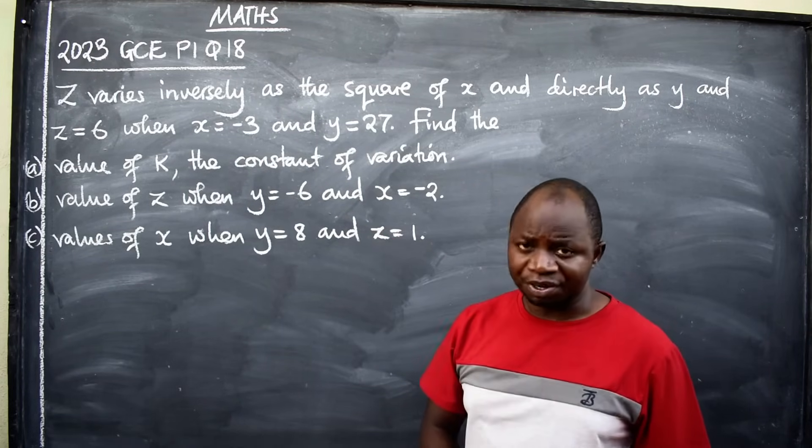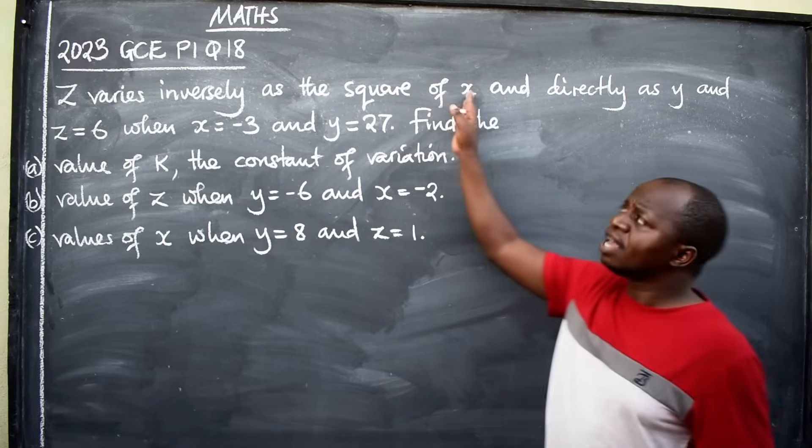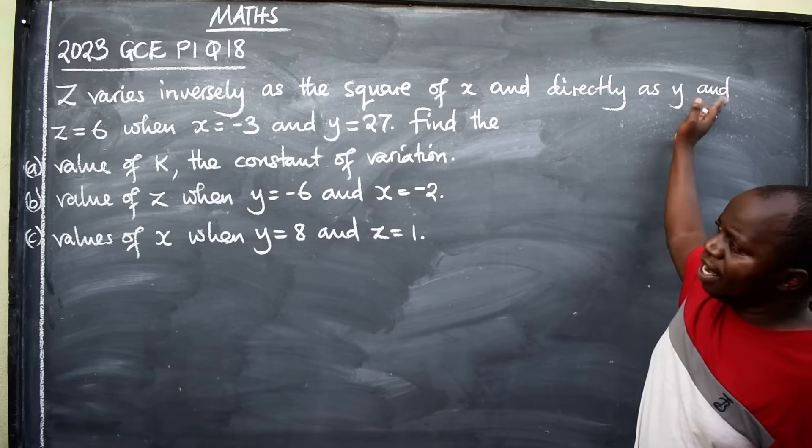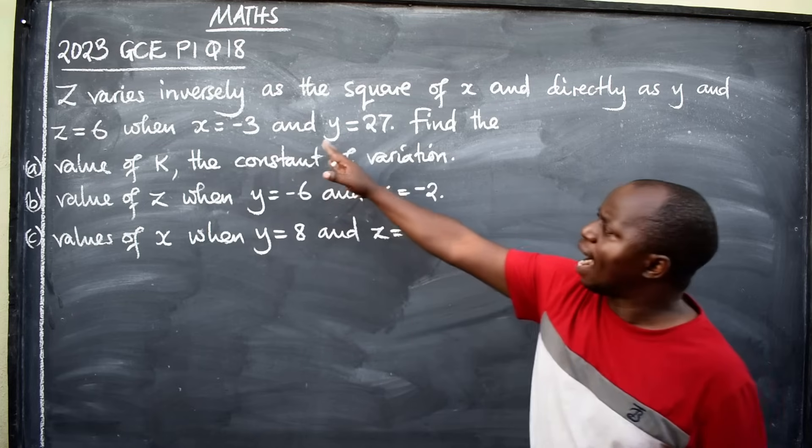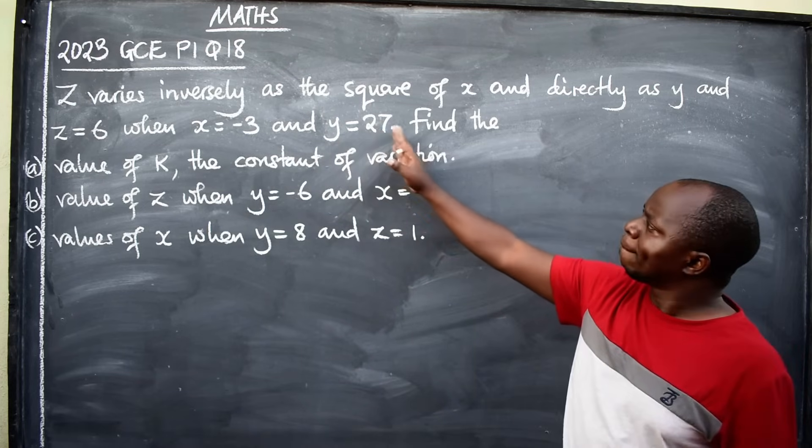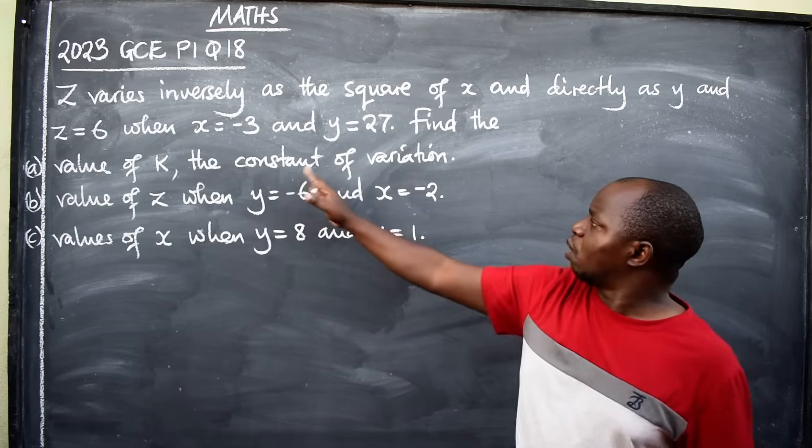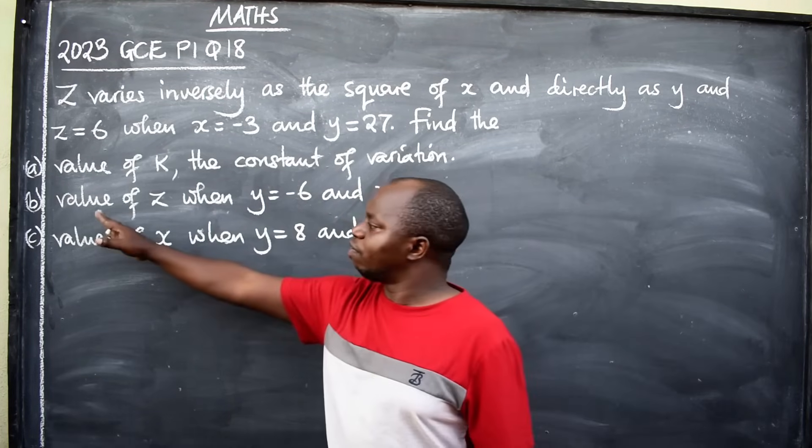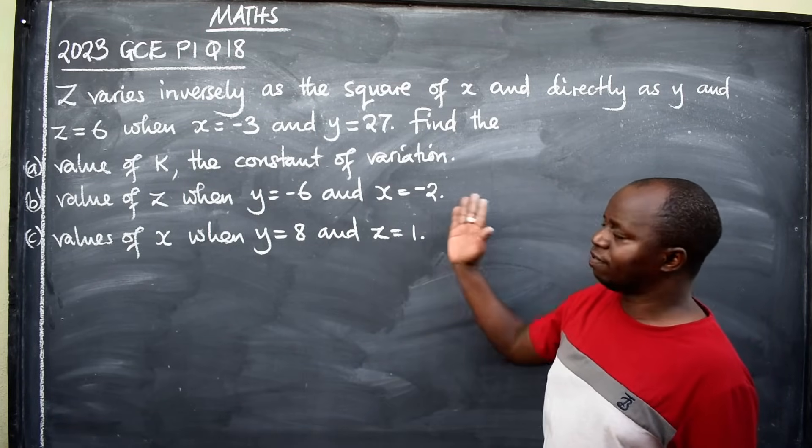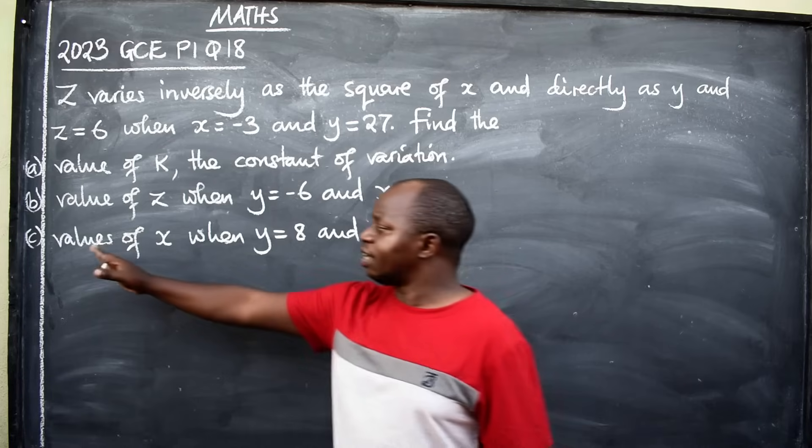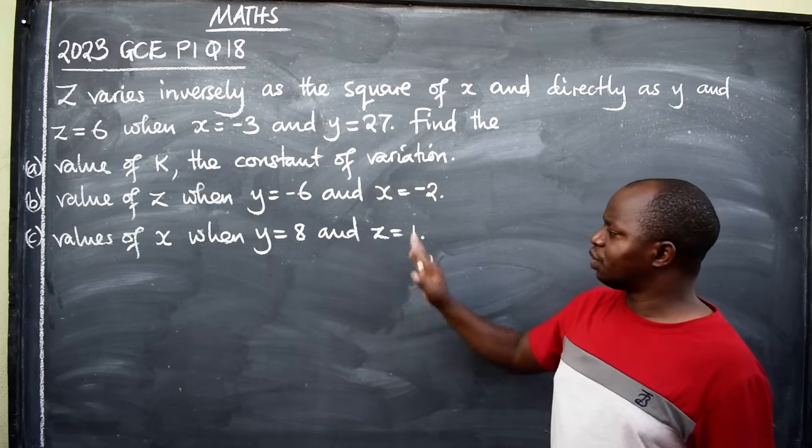The question reads: z varies inversely at the square of x and directly as y, and z is equal to 6 when x is equal to negative 3 and y is equal to 27. Then, find the value of k, the constant of variation; value of z when y is equal to negative 6 and x is equal to negative 2; and values of x when y is equal to 8 and z is equal to 1.